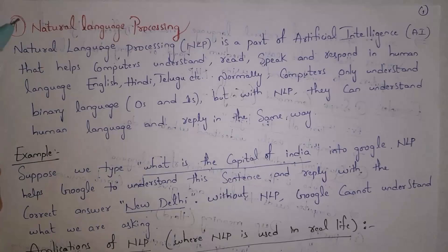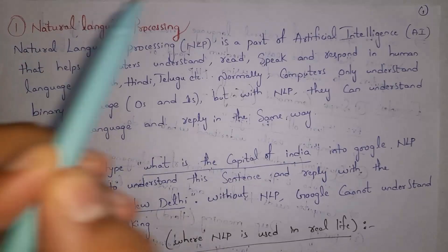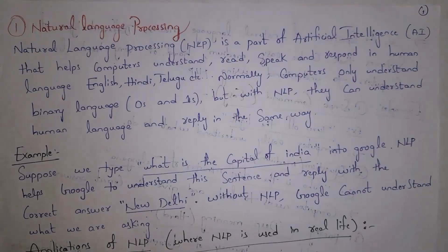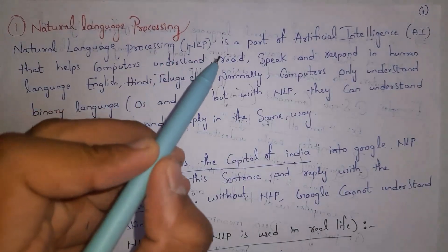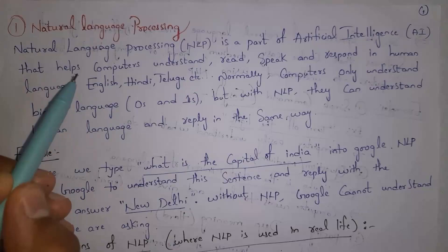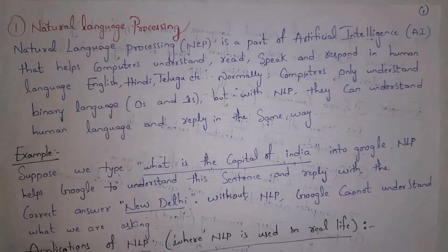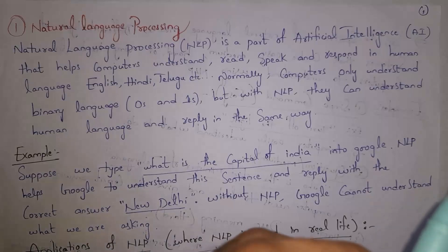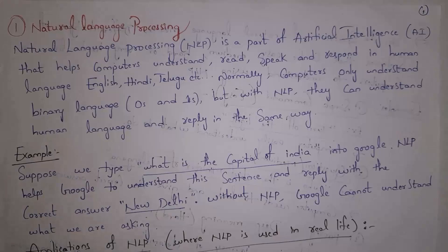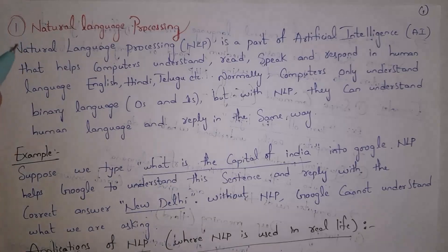Natural language processing is one part of artificial intelligence that helps computers understand, read and respond in human language like English, Hindi, Telugu, etc. Normally computers understand only binary language, that is zeros and ones. But with NLP, computers can understand human language and reply in the same way. Natural language and human language are both the same.